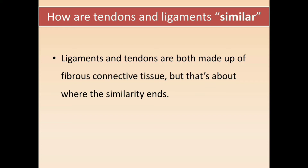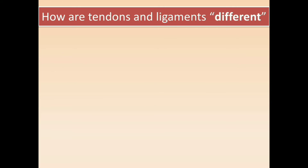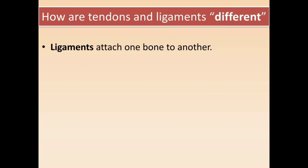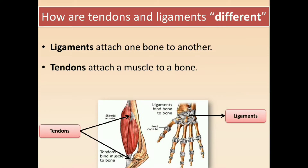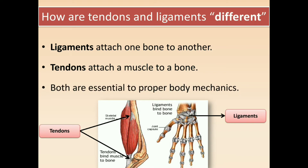Now we will discover how our tendons and ligaments are different. Ligaments attach one bone to another, and tendons attach a muscle to a bone. That is the basic difference between them. And as shown in this picture, muscle is attached to the bone through the tendon, and they are both essential for proper body mechanism.